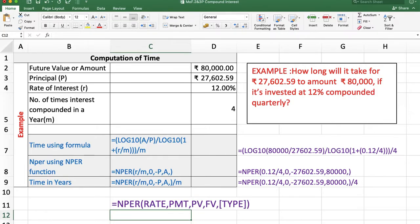In our first example, we want to calculate time. How long will it take for ₹27,602.59 to amount to ₹80,000 if it's invested at 12% compounded quarterly?